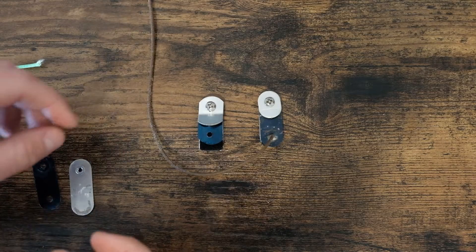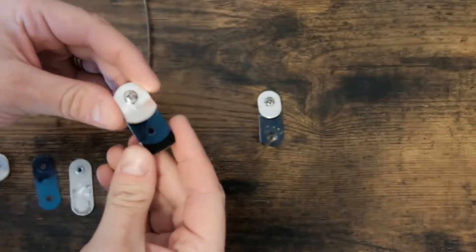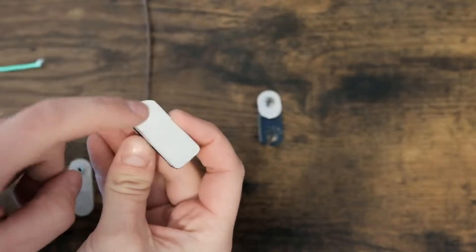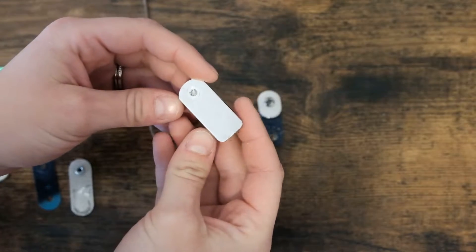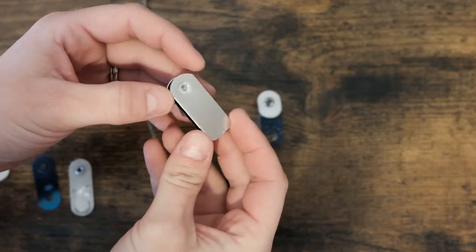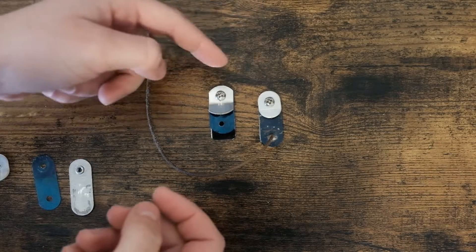Today we're going to go over clickers. So this is kind of what they look like out of the box. Usually they'll already have some sticky back on the back of them. I have two different kinds here.